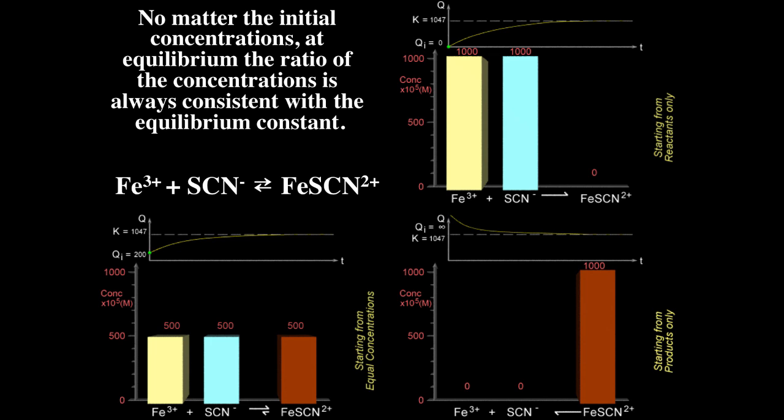Starting with equal concentrations of products and reactants, Q is a little bit less than K, and as the reaction proceeds we end up with Q equal to K. Starting with all products, Q is essentially infinite, and as the reaction proceeds Q decreases until Q equals K. K is the same in all three cases — no matter where you start, you always end up at the most stable configuration.